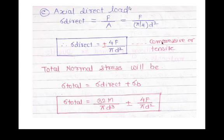For the axial thrust from the helical gear, it creates tension on one side and compression on the other — tension is positive and compression is negative. The direct stress σ_direct = F/A = 4F / πD², since A = π/4 · D² for a circular section.